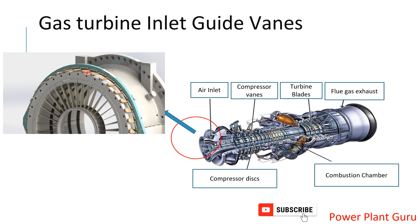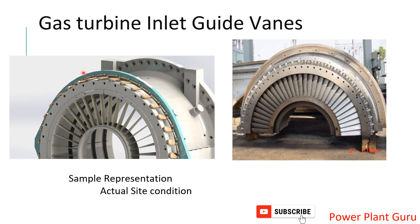Here we can see the IGV vanes and the mechanism which turns these individual vanes. Right now the path is fully open. If we turn all these small levers down, the blade will turn and try to close this path. At the minimum position, it will not be fully closed — there will still be some minimum amount of air flowing through.